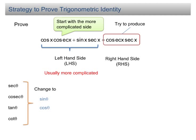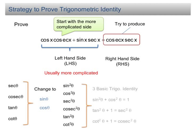If you have expressions such as sin²θ, cos²θ, sec²θ, cosec²θ, tan²θ, and cot²θ, always remember you have three basic trigonometric identities which link these expressions together, and these formulas are given in the SPM formula list.